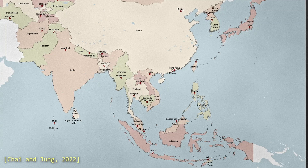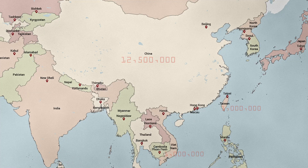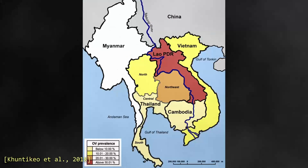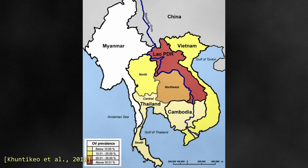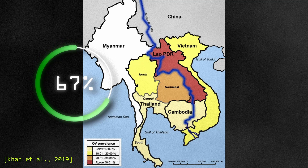Clonorchis is more often seen in China, Taiwan, Vietnam, Russia, and even some parts of Korea. Opisthorchis vivarini is seen in Cambodia, Laos, Vietnam, and most importantly Thailand, where opisthorchiasis has been one of the most common helminth infections. These infections are more common in parts of these countries closest to the Mekong River, where some villages report up to 67% prevalence.